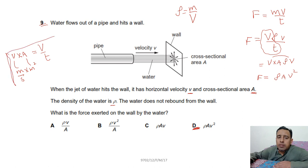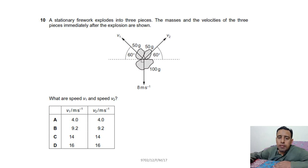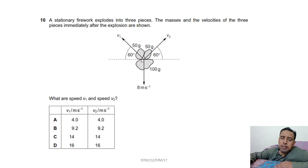Question 10: a stationary firework explodes, so initial momentum is zero. It divides into fragments with velocities v₁ and v₂. We divide the momentum into components using the given masses.